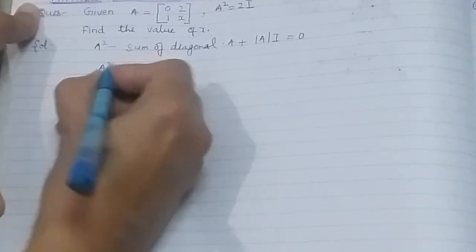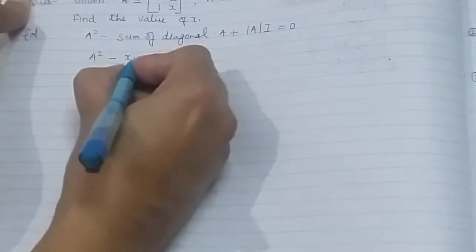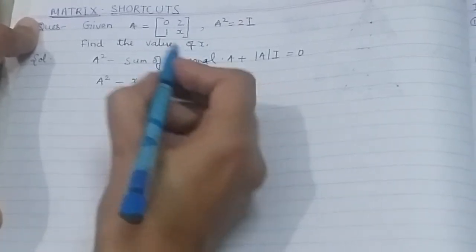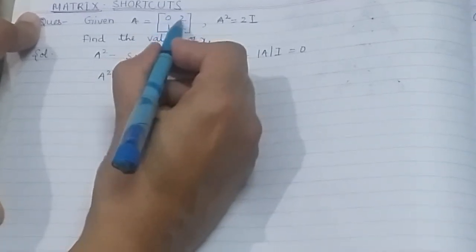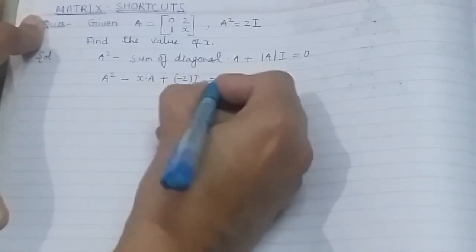So what is A²? Let it be A² only. Sum of diagonals here is 0 plus x, that is x, multiplied by A. Plus the value of the determinant A, this is 0 minus 2, so this is -2I, equals 0.